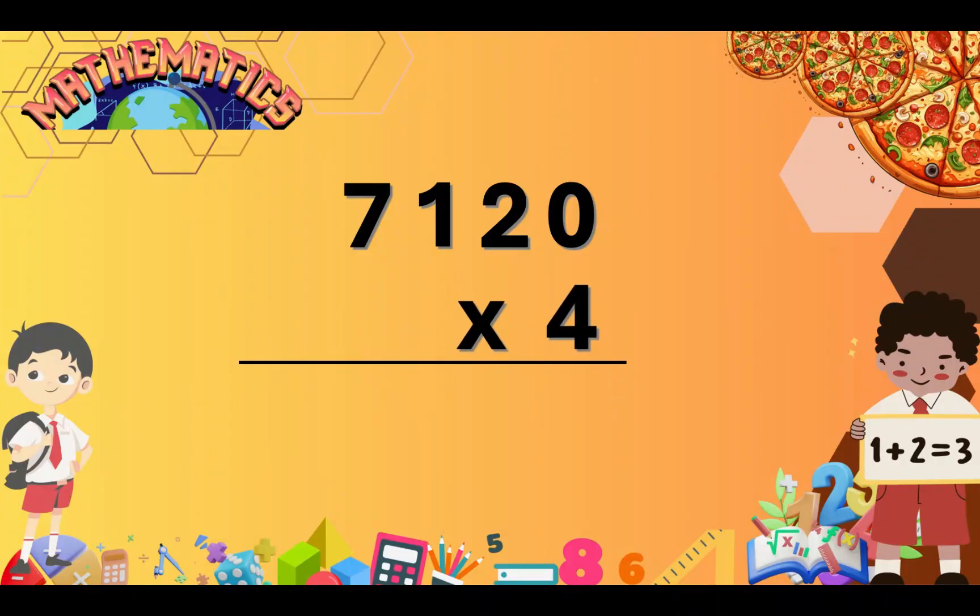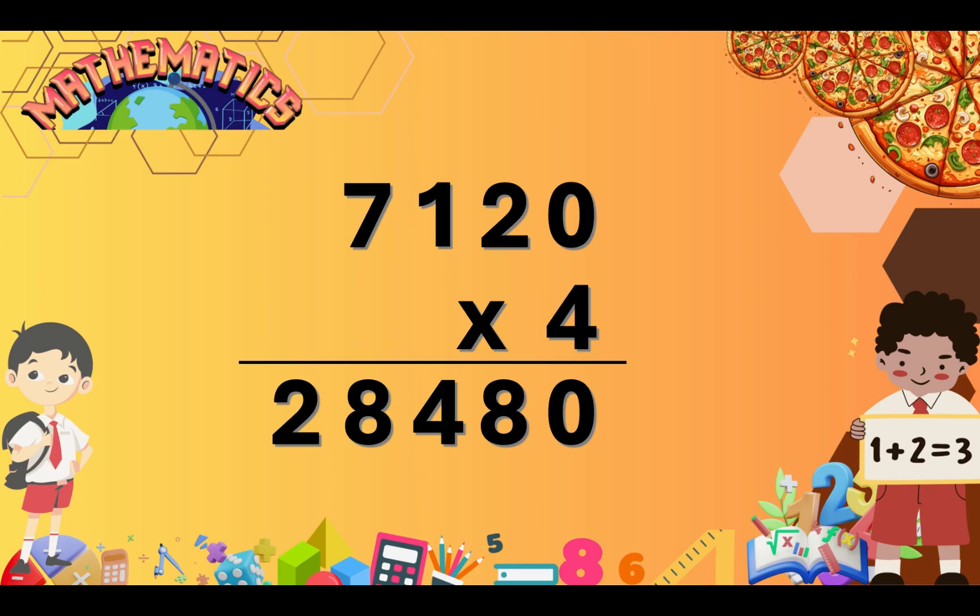Now, let's try this. 0 times 4 will have 0, 2 times 4 equals 8, 1 times 4 equals 4, 7 times 4 equals 28. Our product is 28,480.